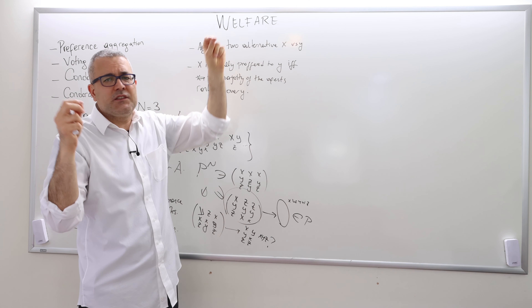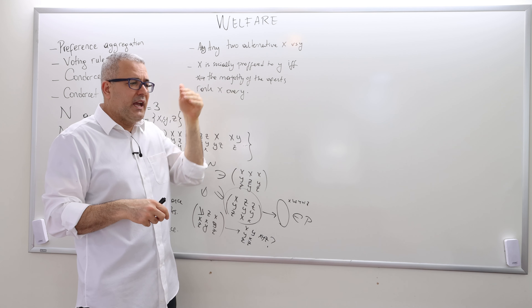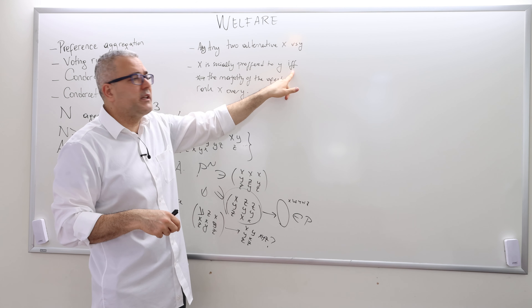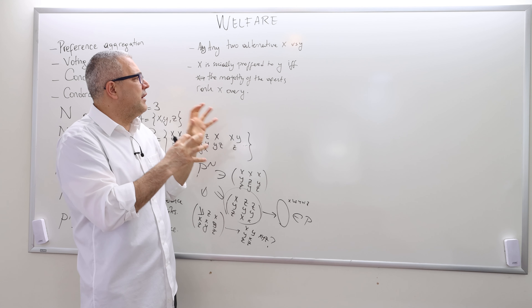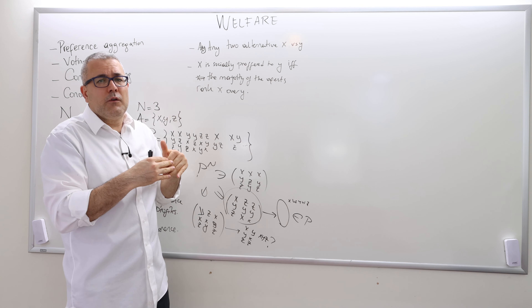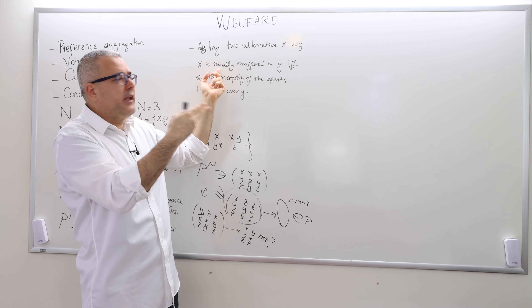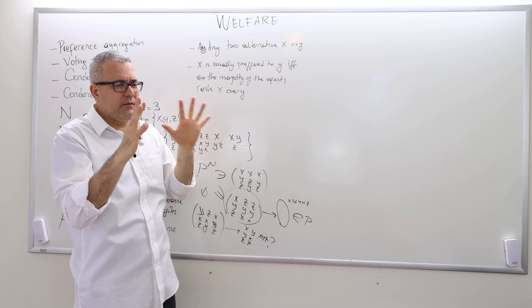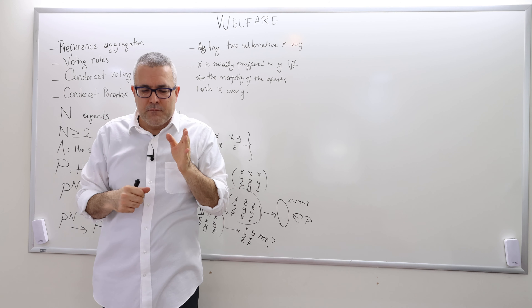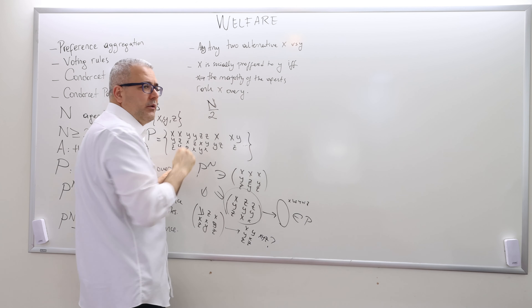Condorcet says: for any two alternatives x and y, we say x is socially preferred to y if and only if the majority of the agents rank x above y. If the majority of voters rank y above x, then y is socially preferred to x. Majority means more than half of the population — if we have n voters, the majority threshold is n/2 + 1 when n is even, or the smallest integer greater than n/2 when n is odd.